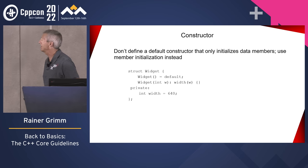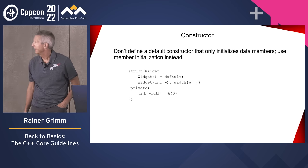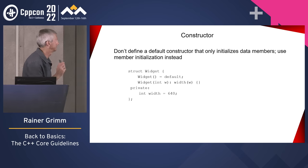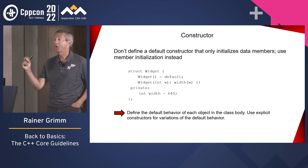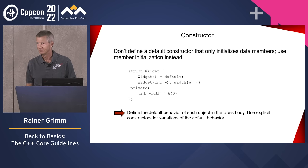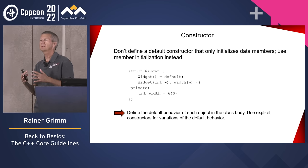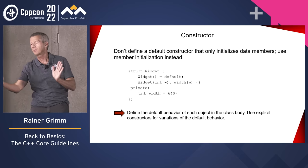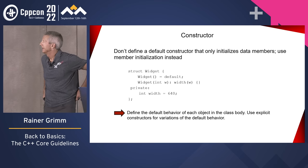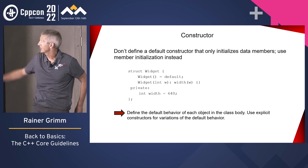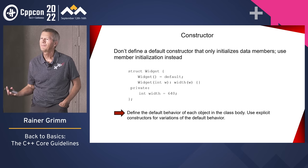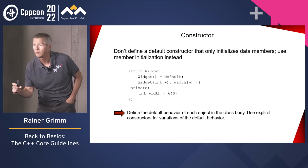Constructors: in C++11 you can and should define each member directly in the class — for example, 'int width = 640'. Define the default behavior for an instance inside the class, and provide explicit constructors only to modify this default behavior. When you apply this rule, you get fewer constructors that are easier to maintain because they have fewer arguments. You encode the default behavior in one place and follow the DRY principle — don't repeat yourself.